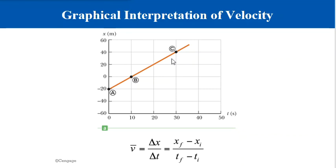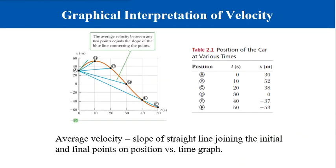However, what if the velocity changes? In the figure, the position versus time is not a straight line because the velocity of the car is changing. We can still draw a straight line between any two points to find the slope, which gives us the average velocity for that particular time interval. In general, the average velocity is equal to the slope of the straight line joining the initial and final points on a position versus time graph.